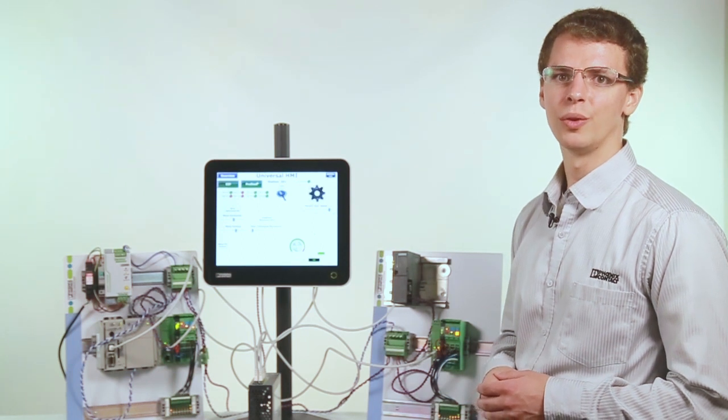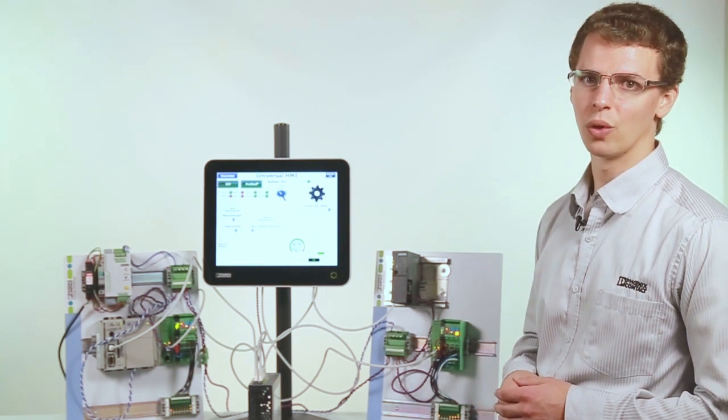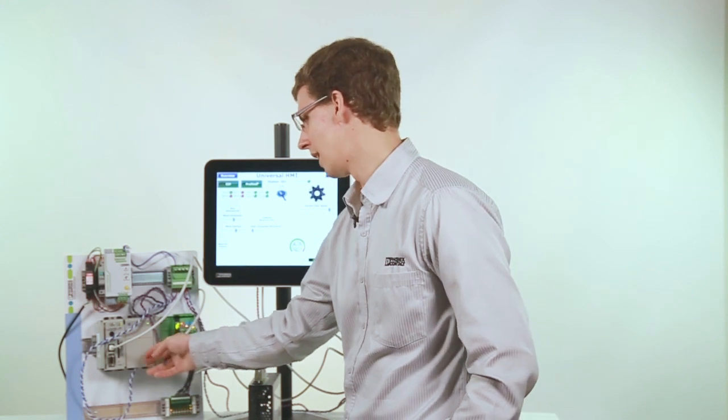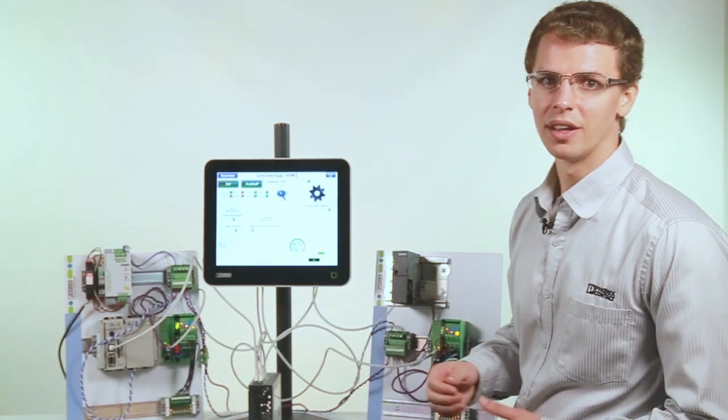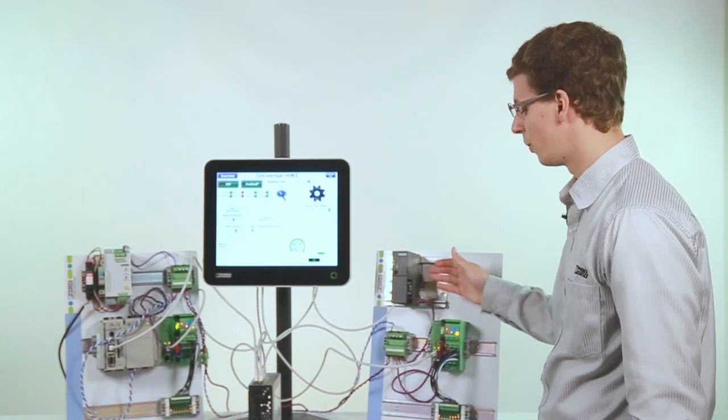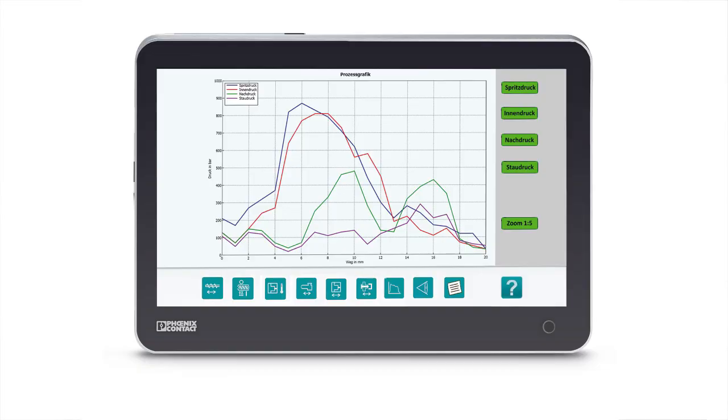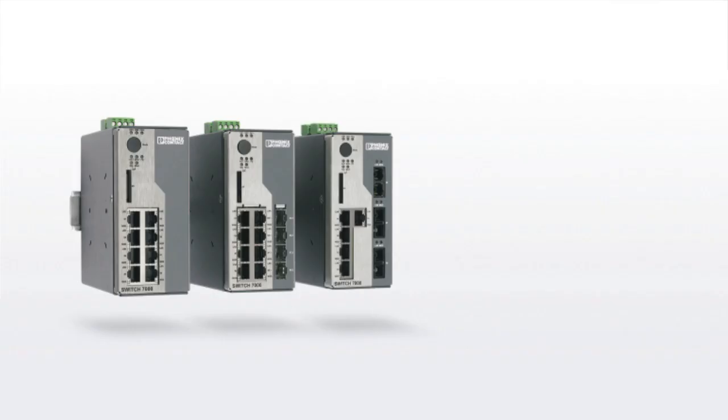As you can see, connected to the Universal HMI is a Rockwell controller with some Ethernet IP I/O, as well as a Siemens controller with some Profinet I/O. They're connected to Phoenix Contact's Universal HMI via Phoenix Contact's 7000 series switch, which switches both protocols.